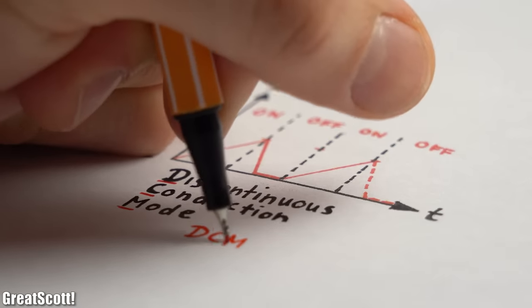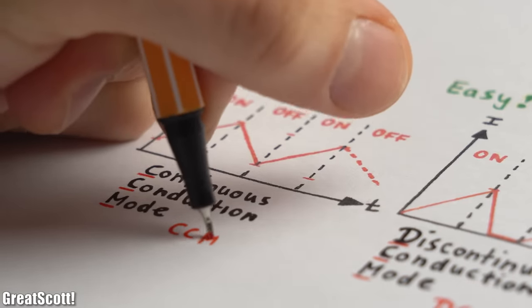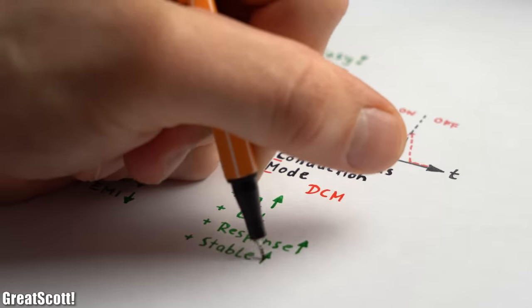These two modes are called discontinuous conduction mode, aka DCM, and continuous conduction mode, aka CCM, and they both come with their own unique advantages and disadvantages.